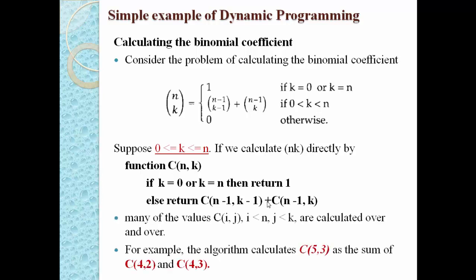For example, if n = 5 and k = 3, then C(5,3) = C(4,2) + C(4,3). Since k = 3 is greater than 0 and less than 5, the second condition is true. C(4,2) further breaks into C(3,1) + C(3,2), and C(4,3) breaks into C(3,2) + C(3,3). So we have many subproblems that must each be solved and stored in a table to eventually get the solution of C(5,3).